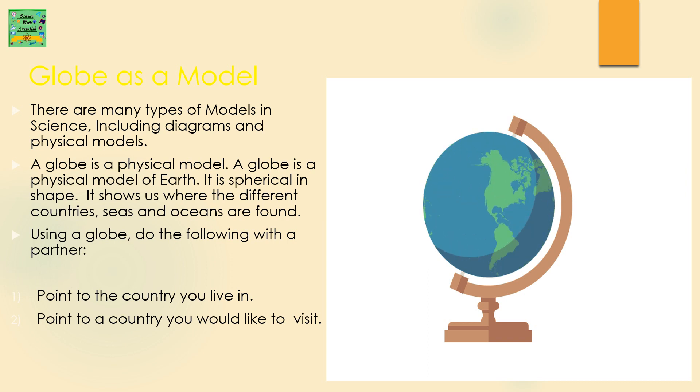Globe as a model. There are many types of models in science, including diagrams and physical models. A globe is a physical model. A globe is a physical model of Earth. It is spherical in shape. It shows us where the different countries, seas, and oceans are found. Using a globe, do the following with a partner. Point to the country you live in. Point to a country you would like to visit.